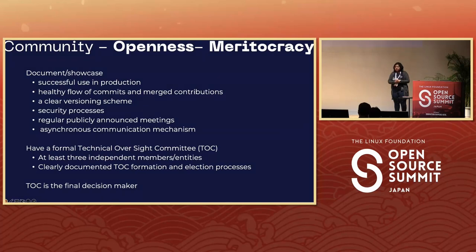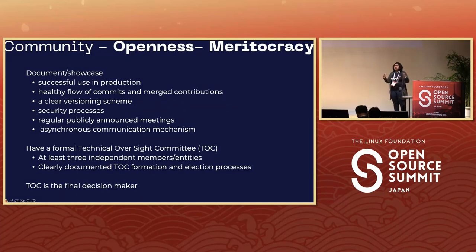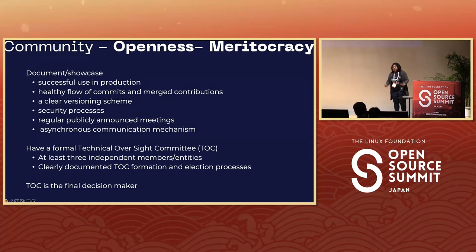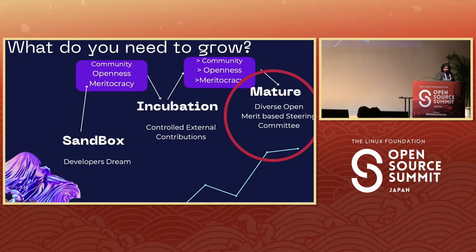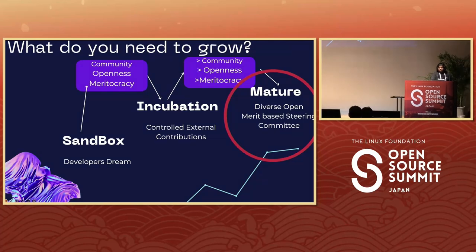Make contributors part of your technical oversight committee or technical steering committee, whatever you want to call it — make all those decisions out in the open. Have a meeting time which is public; anybody can join the meeting. Maybe decisions are made by the technical steering committee, but the meeting is free to join and anybody can voice their opinions. Always have an asynchronous communication channel — maybe somebody is in a different time zone, or doing it in their free time after domestic duties. They can't join another meeting, but they can join an asynchronous channel. Be inclusive, and hopefully that will lead you to being a mature open source project.